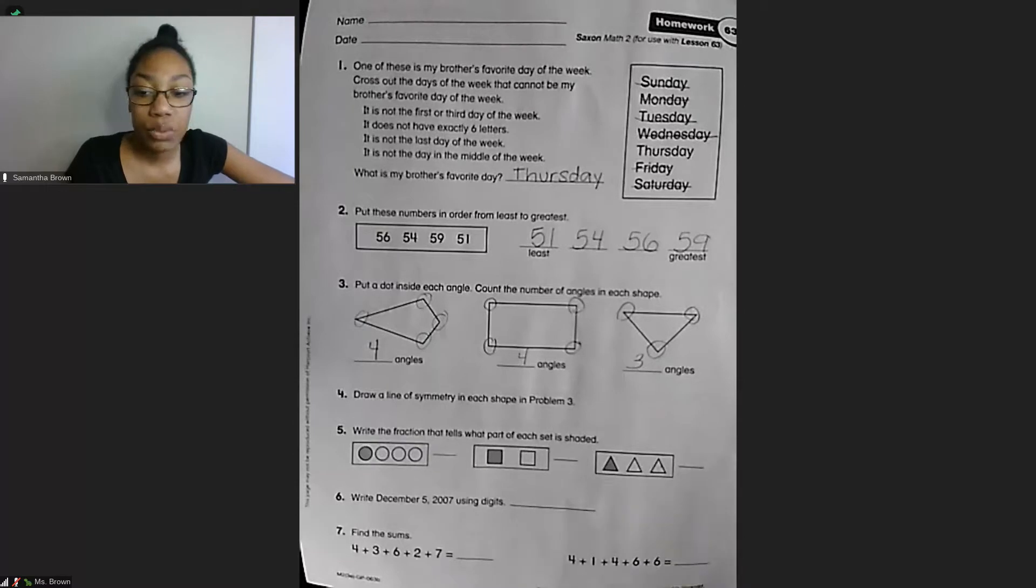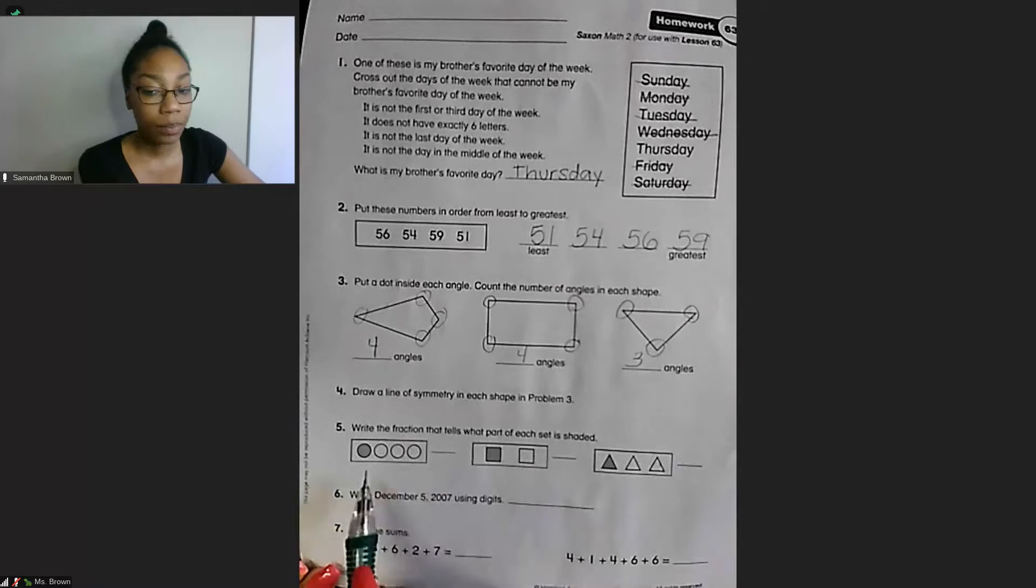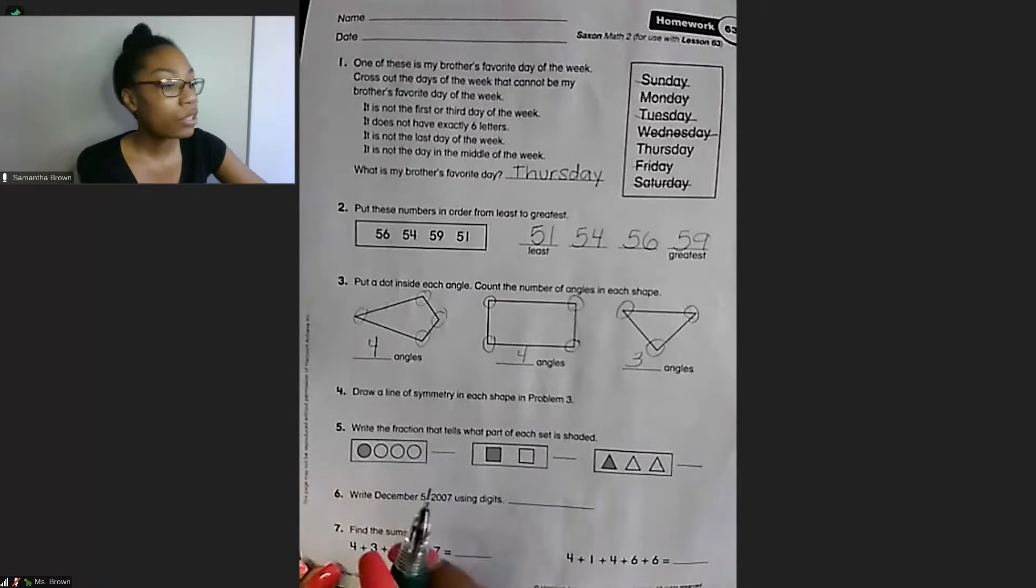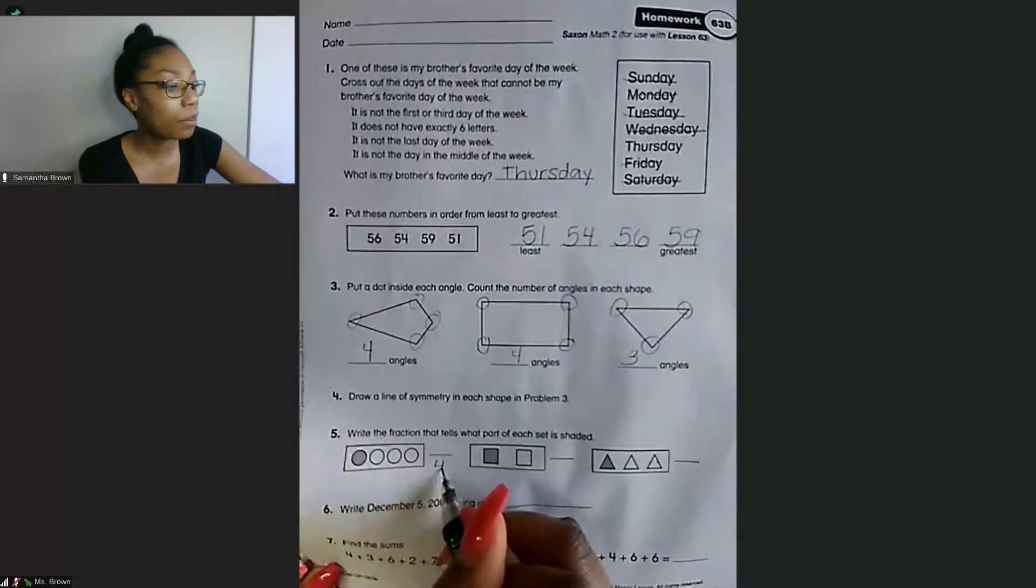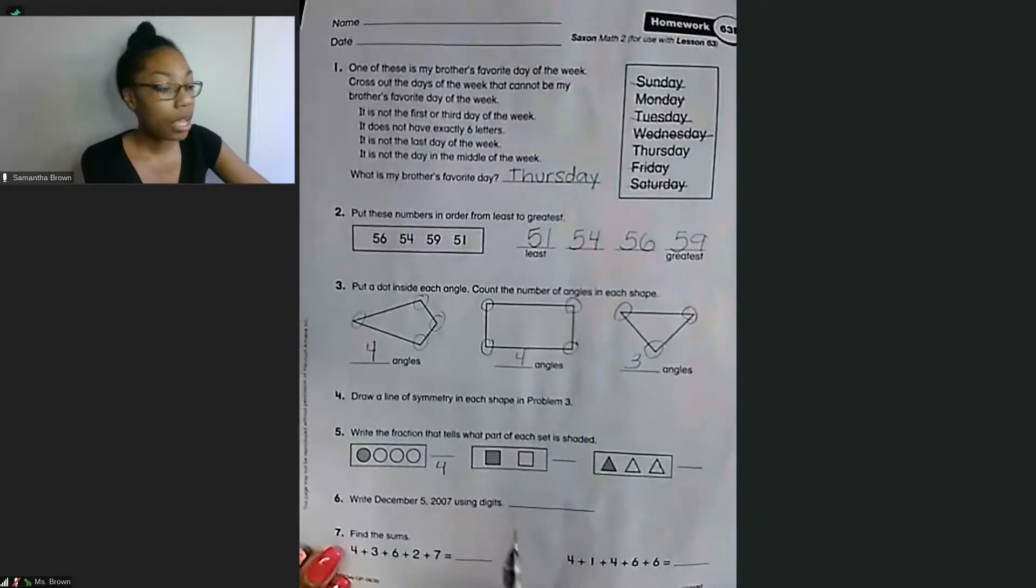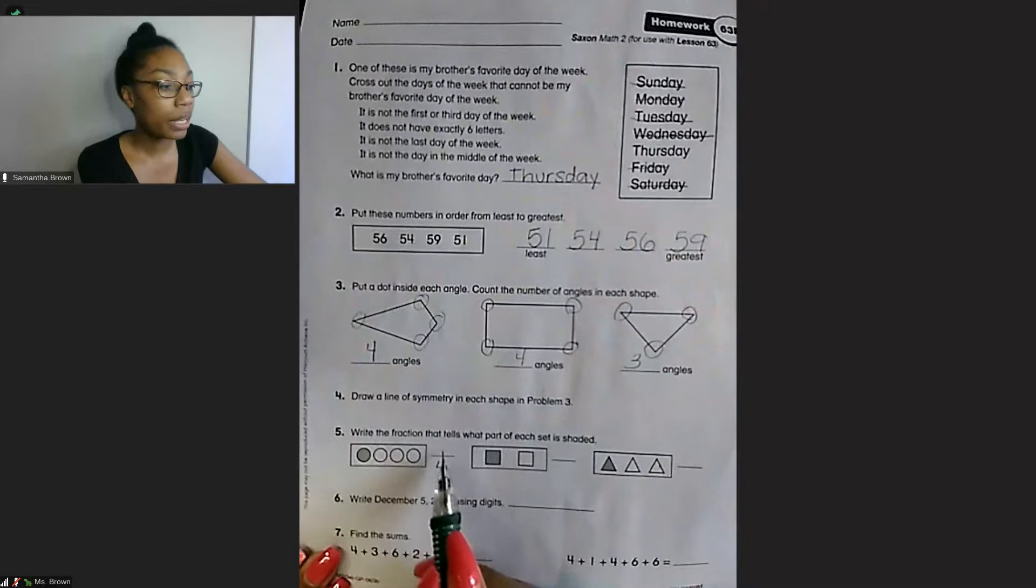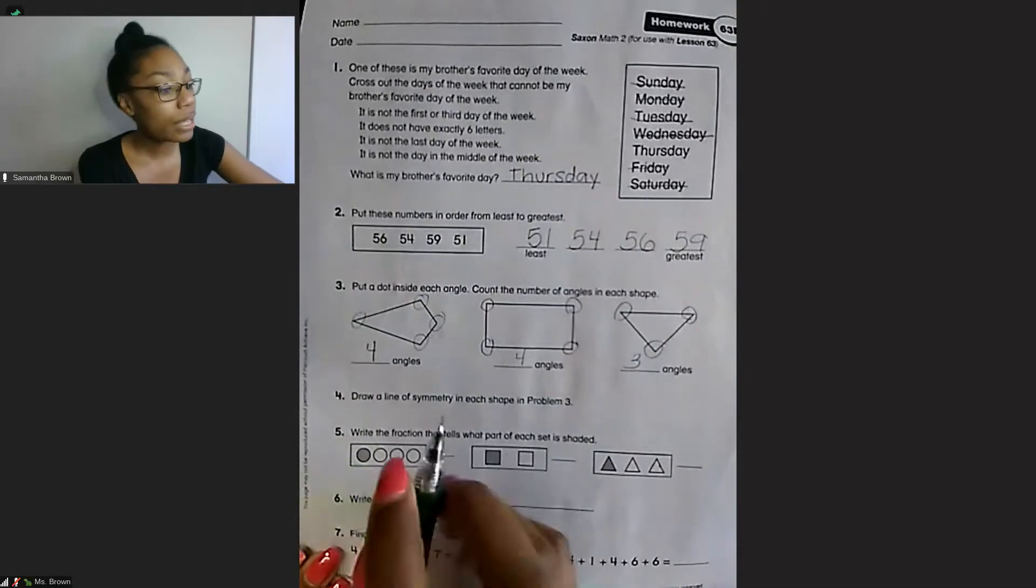Number five says write the fraction that tells what part of each set is shaded. So remember with our fractions, our number on the top is the number of pieces shaded, which is our numerator, and our denominator is how many pieces in this set do we have total. So I'll start with this one. We have one, two, three, four pieces in the set total, so that is our denominator or the number that goes on the bottom. And then on the top we are writing the number of pieces we have shaded, so that is one.